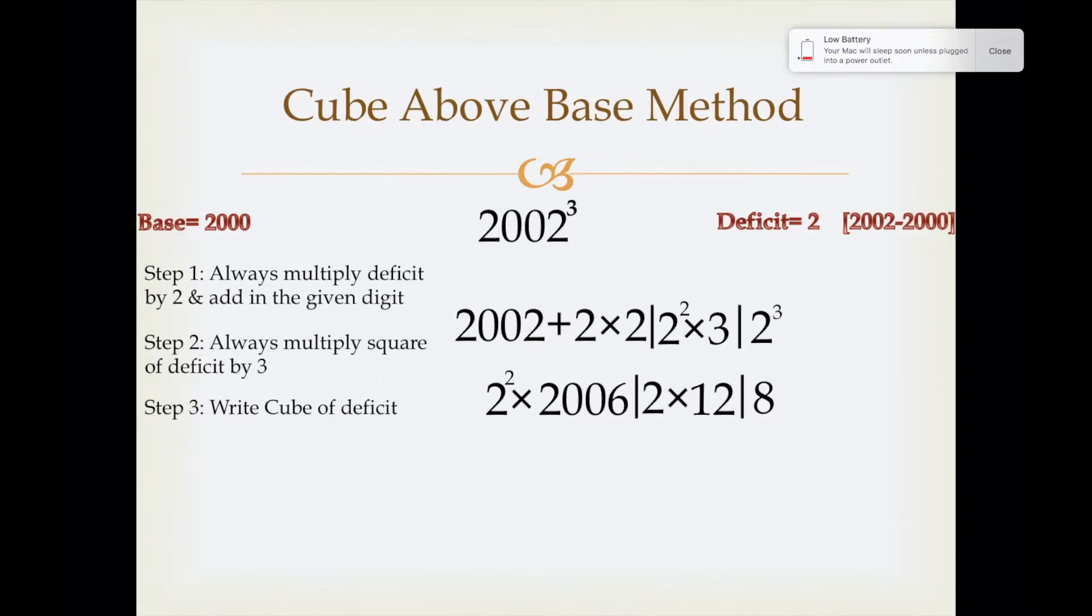In the previous example, there was the base 100. This is why we did not multiply the first step and second step by 1 square and 1 respectively, because it makes no sense multiplying a number with 1 because it will give us the same result.